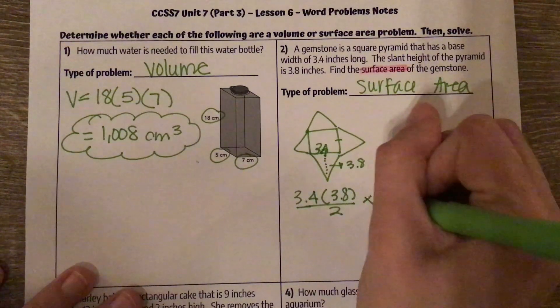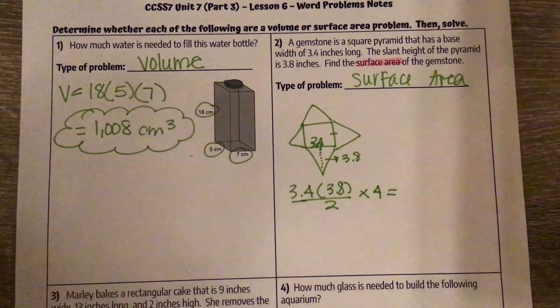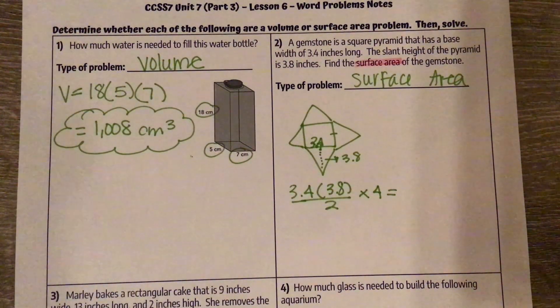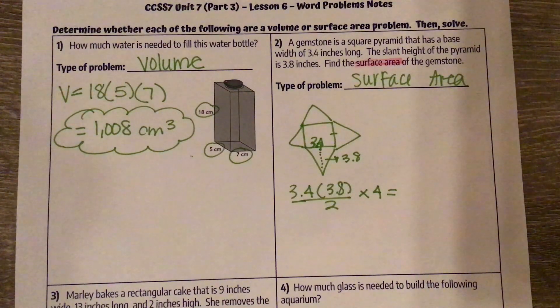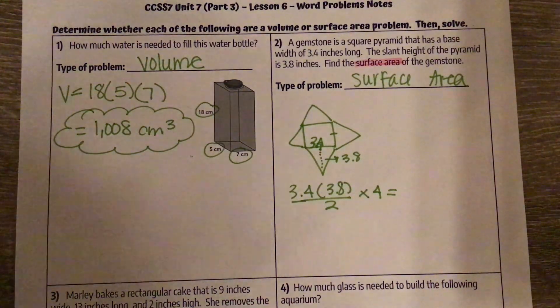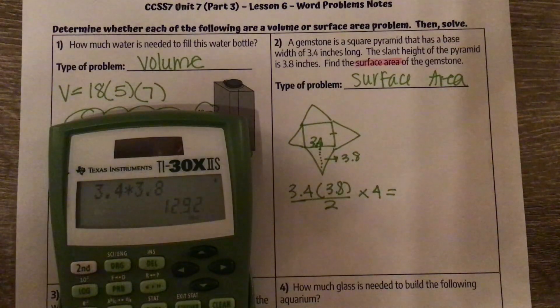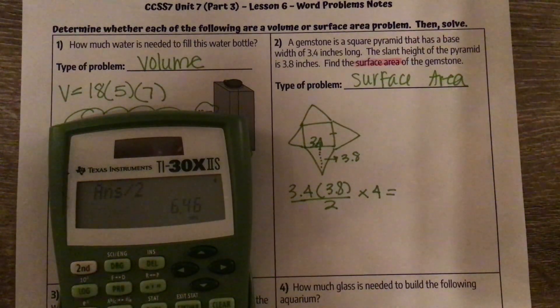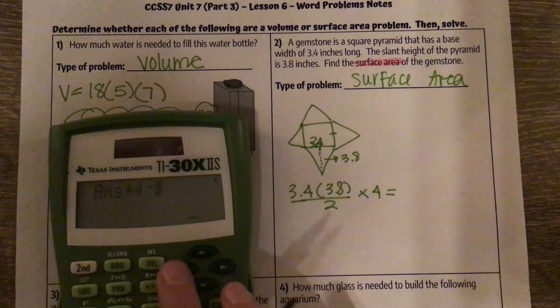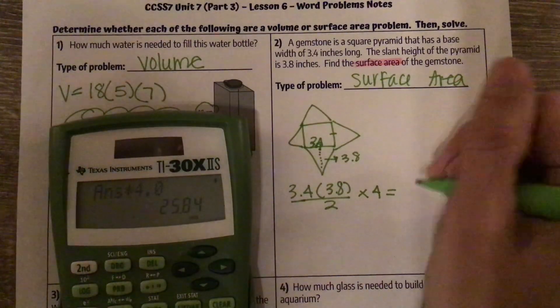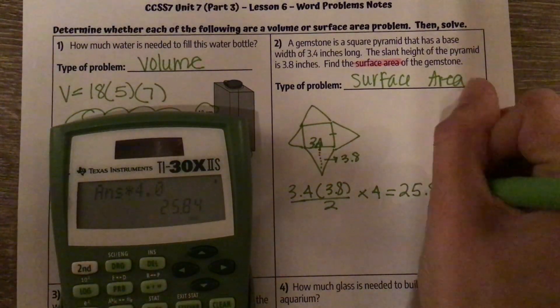But there's 4 of them, so I'm multiplying it by 4, which gives me 3.4 times 3.8, divided by 2, multiplied by 4, gives me 25.84.